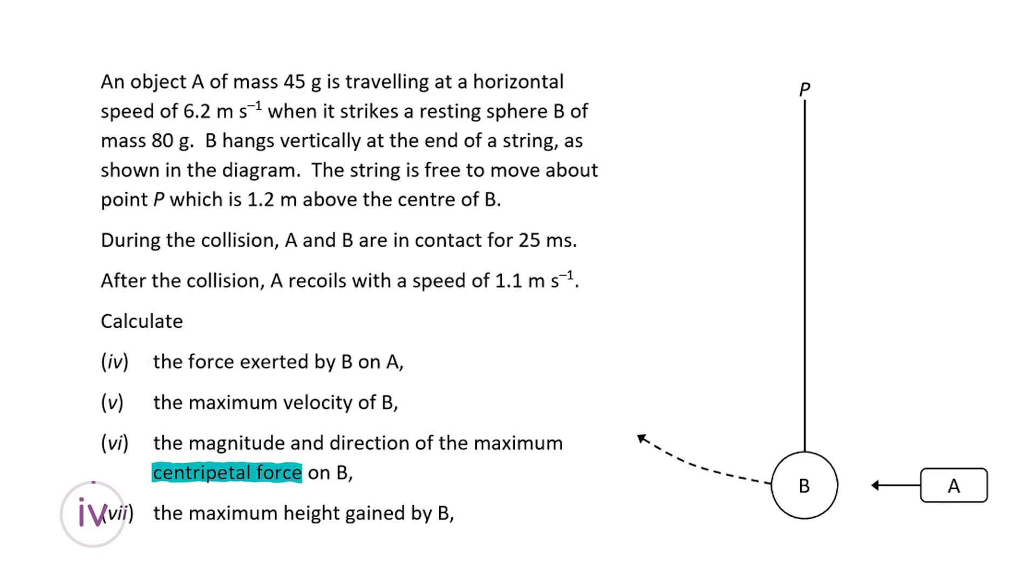Now onto the more calculations-oriented part of the question. We are told that an object A of mass 45 grams is traveling at a horizontal speed of 6.2 meters per second and it strikes a resting sphere B of mass 80 grams. The string is 1.2 meters above the center of B. We have a collision and the two particles are in contact for 25 milliseconds, and the recoil velocity of A is 1.1 meters per second. We will need to use this information in the next six parts.